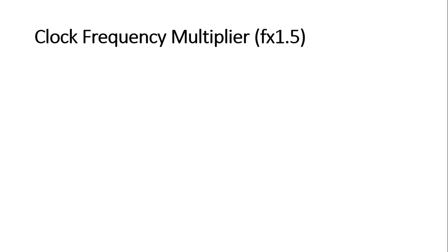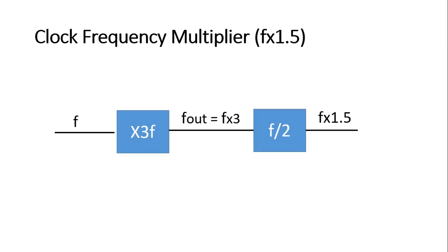Let us take our first challenge and design a clock frequency multiplier that multiplies an input clock frequency by 1.5. Let me reveal its design. First, I take a frequency multiplier that multiplies by 3, giving F_out = F × 3. Then I use a frequency divider that divides by 2, and ultimately I get a frequency multiplied by 1.5 with respect to the input clock frequency.